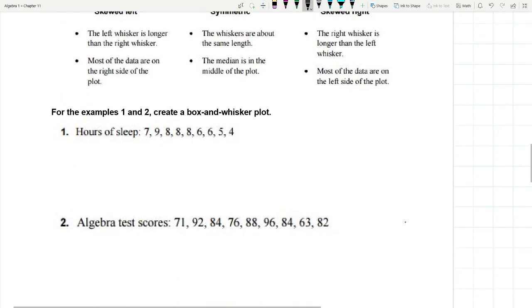Let's do a couple examples. Let's make some box and whisker plots. Number one, hours of sleep. We have 7, 9, 8, 8, 3, 8, 6, 6, 5, and 4. Seems like my sleep schedule.